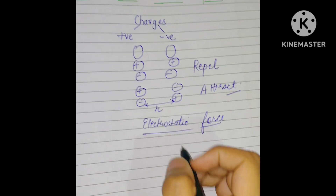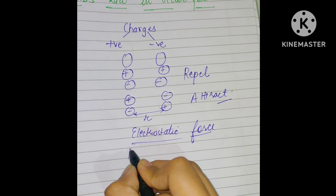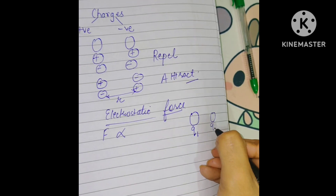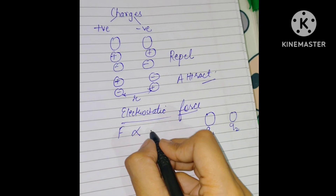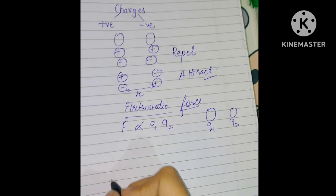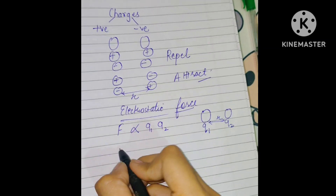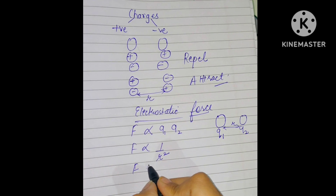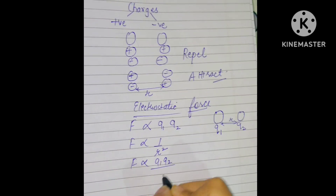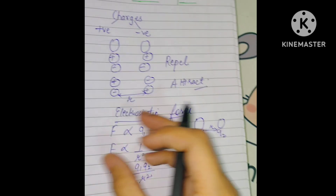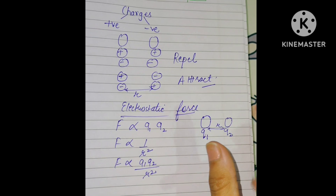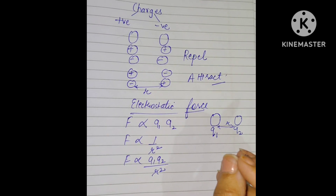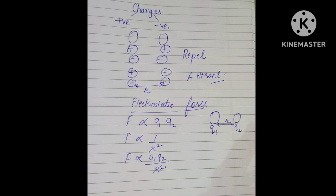Coulomb, the scientist who gave this law, stated that the magnitude of force is directly proportional to the product of the two charges q1 and q2, and inversely proportional to the square of the distance between them. Combining these, F is directly proportional to q1·q2 over r². If distance increases, the force between them decreases.